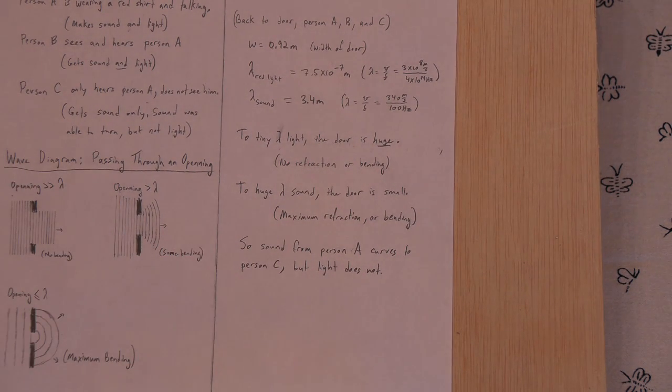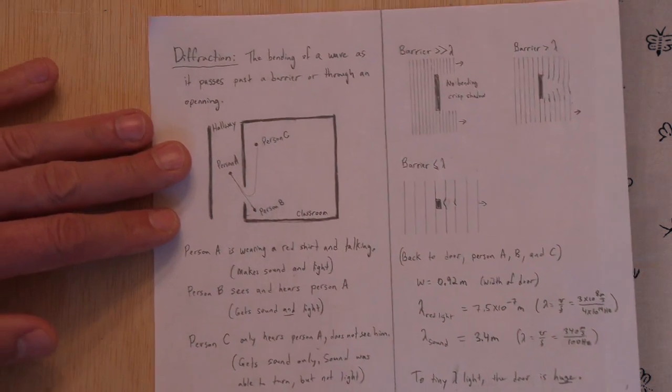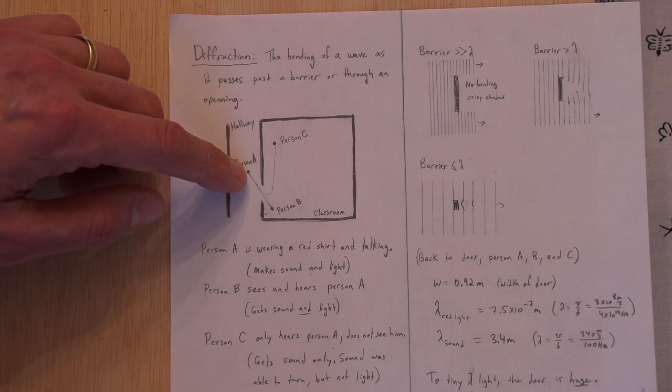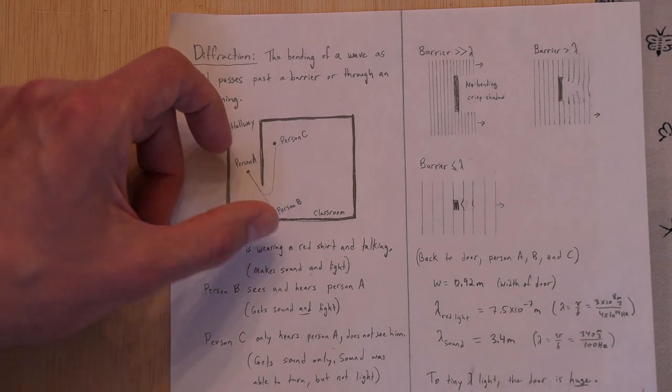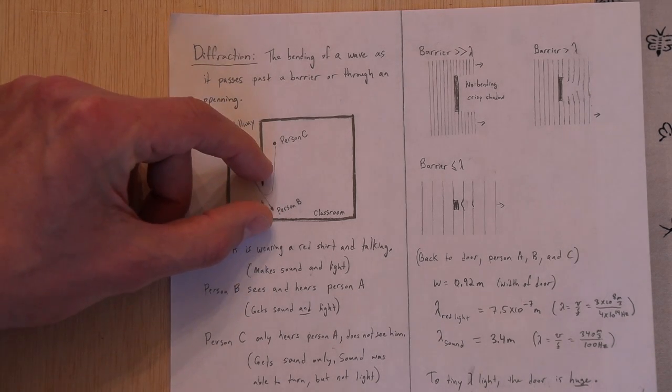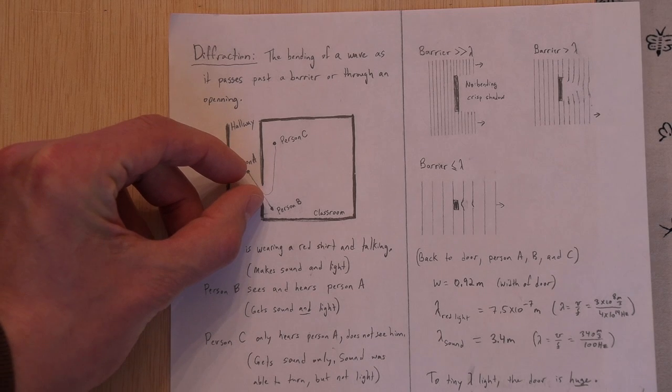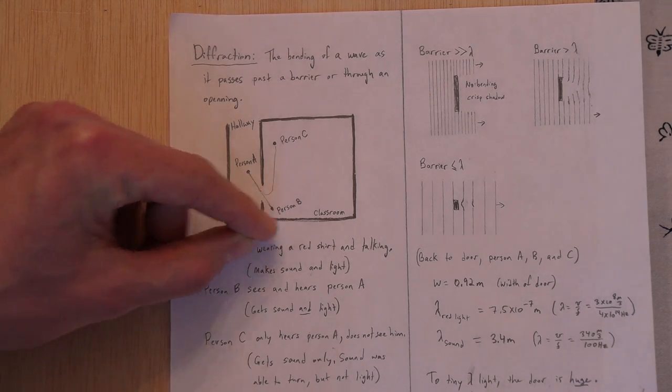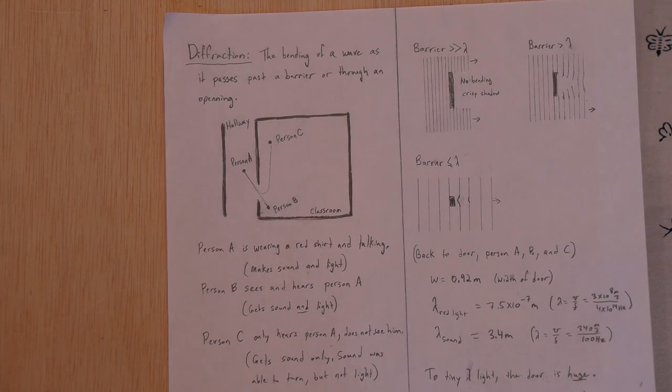So that is why the sound from person A curves to person C, but the light does not. So here's that original diagram. Sound can curve because the sound waves are so long and they're hitting that doorway. The light waves are so short that they don't curve through that same opening.